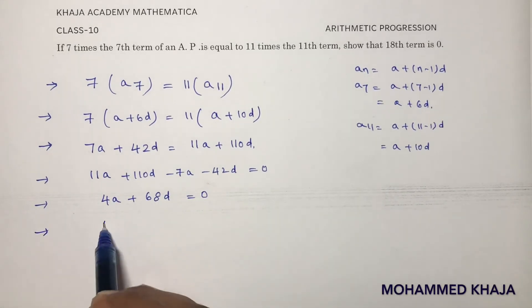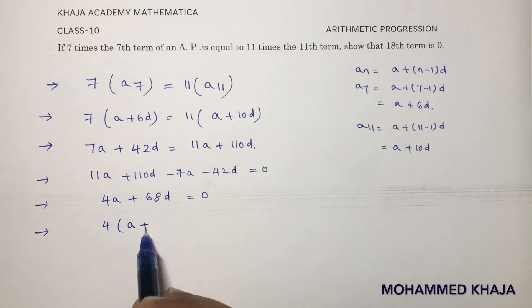Now here, if I will take 4 common, a plus 17d. Now a plus 17d equals 0.